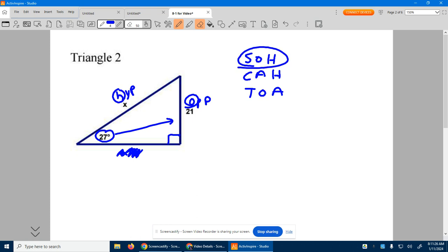That's a sine problem, so I'm going to write sine of the angle, which is 27 degrees, over 1 equals. It says it has to be opposite, which is 21, divided by the hypotenuse, which we don't know is X.